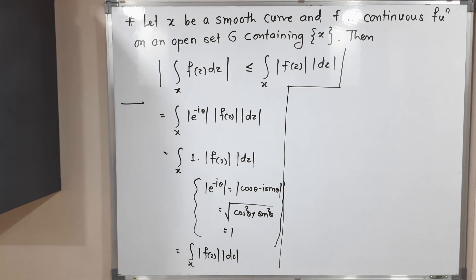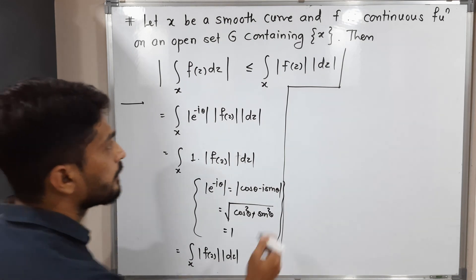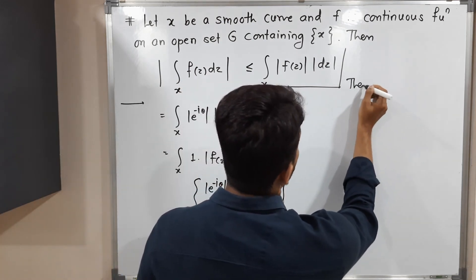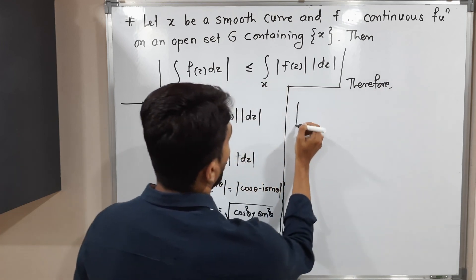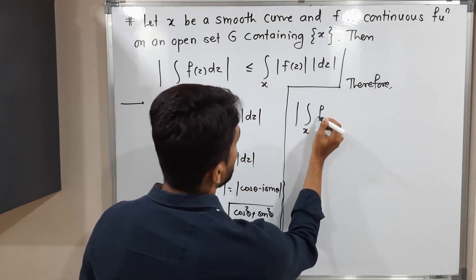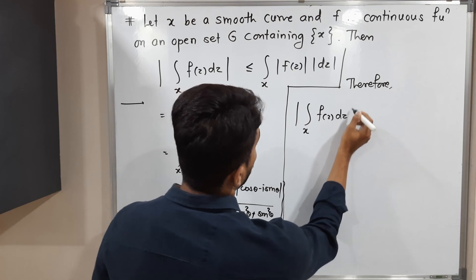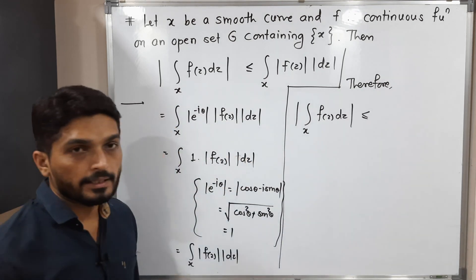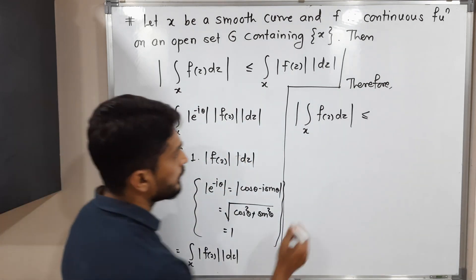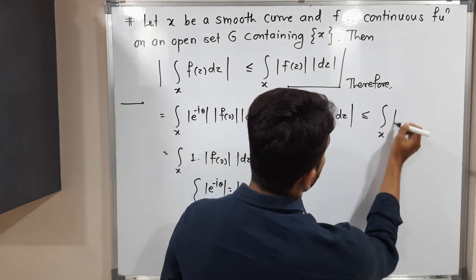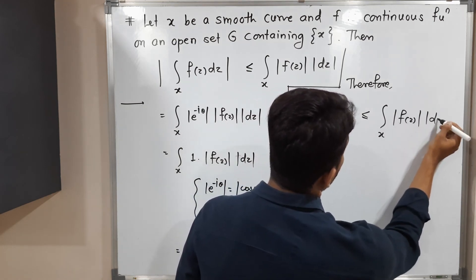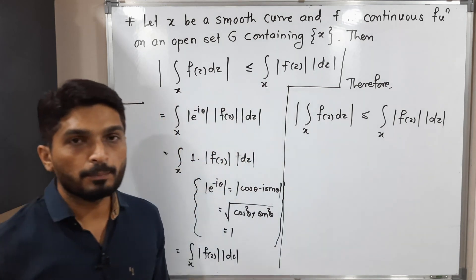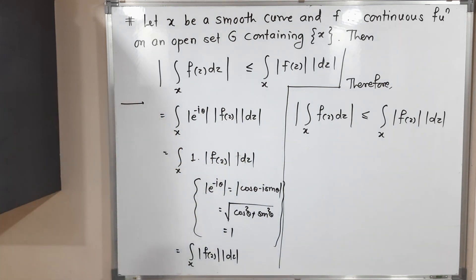Therefore, we can write: |∫_x f(z) dz| ≤ ∫_x |f(z)| |dz|. In this way we have proved this inequality. Thank you, bye-bye.